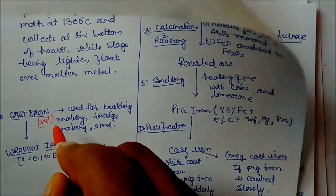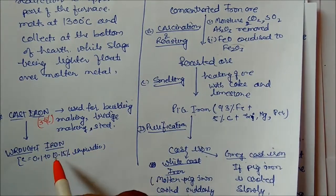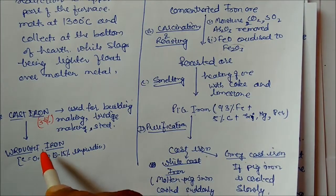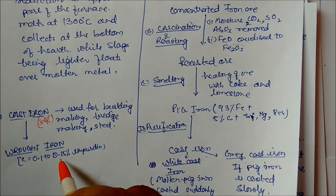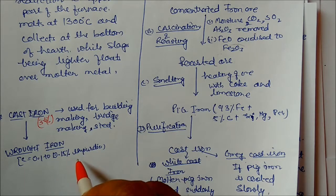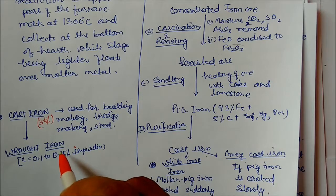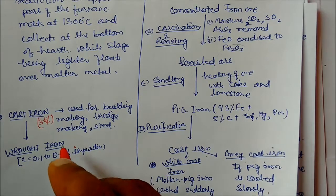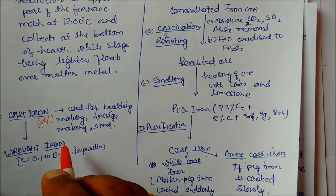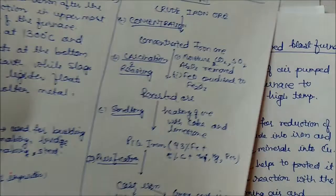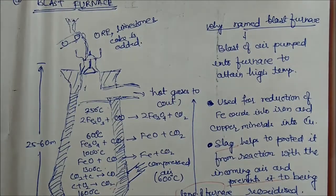Cast iron still contains about 3 to 4 percent carbon. Further purification gives wrought iron, which contains only 0.1 to 0.15 percent impurities. Wrought iron is the purest form of iron.